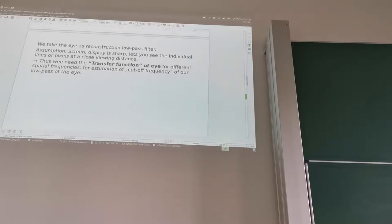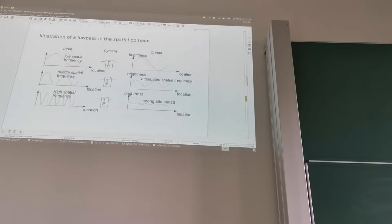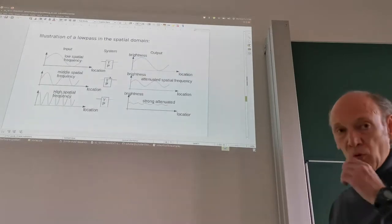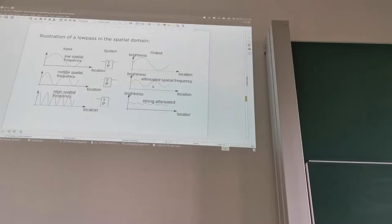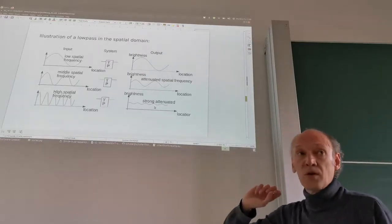The assumption is that the screen is sharp and lets you see individual pixels at close viewing distance. We need the transfer function of the eye for different spatial frequencies to estimate the cutoff frequency for the eye's low-pass. Low frequencies pass without change. In the middle range the non-perfect low-pass attenuates somewhat. At high frequencies there is good attenuation — just a little ripple. This is our eye's filter: not suddenly stopping but gradually increasing attenuation.